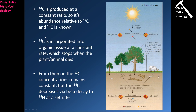Throughout your entire life, you are constantly adding carbon-14 to your body — constantly replenishing it. The carbon-14 in your body is added every time you eat something, whether meat or plants. The carbon-14 in your body is also decaying because it's radioactive, so you are constantly losing carbon-14, but constantly adding new carbon-14 to replace what's been lost. Your body therefore maintains a pretty much constant level of carbon-14 as long as you're alive.